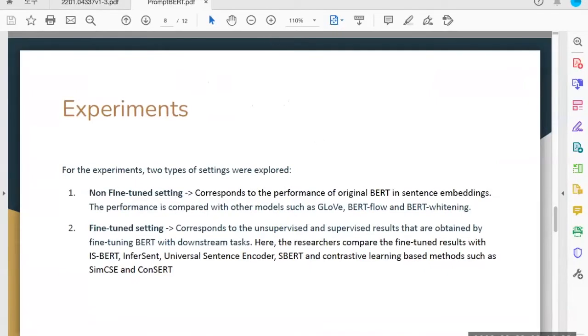In the fine-tuned setting, this corresponds to unsupervised and supervised results that are obtained by fine-tuning BERT with downstream tasks. Here the results are compared with different sentence embedding models like InferSent, SBERT, Universal Sentence Encoder, Sentence-BERT, and contrastive learning based methods such as SimCSE and ConSERT.